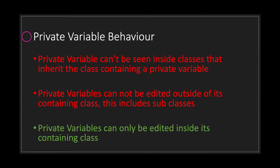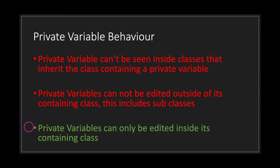Private variables have three behaviors. The first is that private variables can't be seen inside classes that inherit the class containing a private variable. The second behavior is that private variables cannot be edited outside of their containing class, and that includes subclasses. Finally, private variables can only be edited inside their containing class.